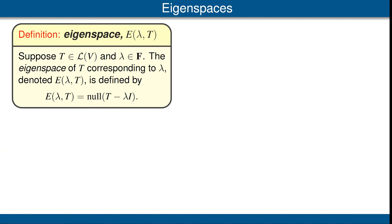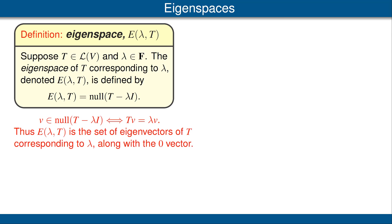Suppose t is an operator on v and lambda is a number. The eigenspace of t corresponding to lambda, denoted e of lambda, t, is defined to equal the null space of t minus lambda times the identity. For a vector v to be in this null space, we must have t minus lambda i applied to v equaling 0, which is equivalent to t of v equals lambda v. In other words, the eigenspace e of lambda t is exactly the set of all eigenvectors of t corresponding to lambda, along with the 0 vector.